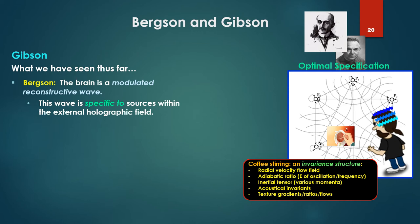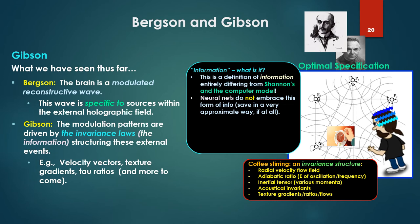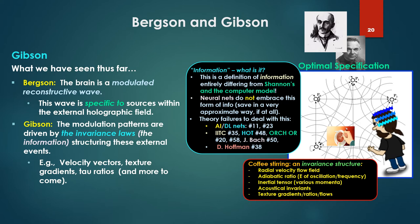What have we seen thus far? For Bergson, the brain is a modulated reconstructive wave, and the wave is specific to sources within the external holographic field. For Gibson, the modulation patterns are driven by the invariance laws, that is, the information structuring these external events. For example, velocity vectors, texture gradients, tau ratios, and more. This is how, for Gibson, the specification is effected. This is a definition of information, the invariance structure, entirely different from Shannon's and the computer models' information theory. Neural nets do not embrace this form of information, save in a very approximate kind of statistical way, if at all. The theory fails to deal with this essential form of information structuring events.